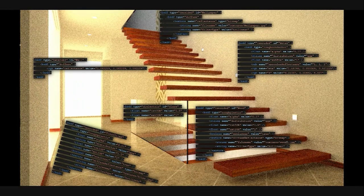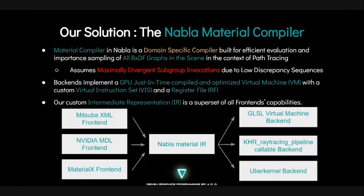So what was our solution? We followed a similar model to LLVM: multiple frontends, a single intermediate representation, and some backends. The context here is that this material compiler is a domain-specific compiler, built for efficient evaluation and importance sampling of all the BXDF graphs in the scene — not only one material — specifically for the context of path tracing. If you are using a low-discrepancy sequence, that's going to throw your samples as far as it can across the domain, especially if you want progressive rendering, which will seriously mess up your convergence across your subgroup.